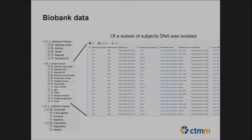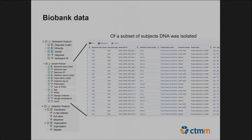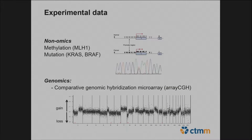There is biobank data for a subset of patients — DNA has been isolated and put into a catalog, so we have information on the patient, what sample was taken, how it was stored, and there is also a collection protocol describing who to contact if you want access to the DNA. For experimental data, there's methylation data — whether a gene is methylated or not — and mutation data, whether it's mutated or wild type.